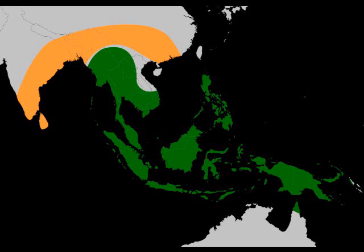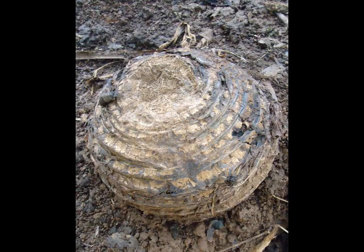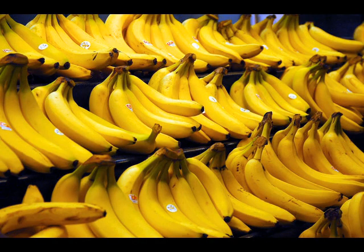The fruits grow in clusters hanging from the top of the plant. Almost all modern edible parthenocarpic seedless bananas come from two wild species, Musa acuminata and Musa balbisiana. The scientific names of bananas are Musa acuminata, Musa balbisiana, and Musa paradisiaca for the hybrid Musa acuminata × balbisiana, depending on their genomic constitution.